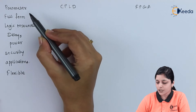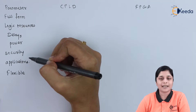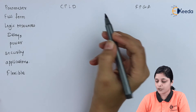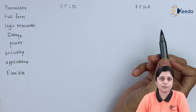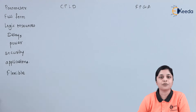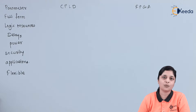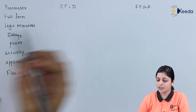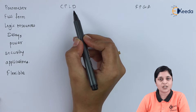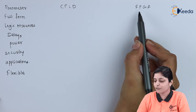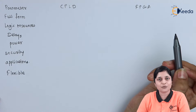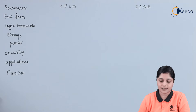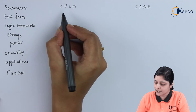With these parameters we are going to compare the CPLD with FPGA. First of all you should know the full form of CPLD and FPGA. CPLD stands for Complex Programmable Logic Devices and FPGA stands for Field Programmable Gate Arrays.